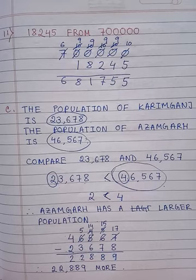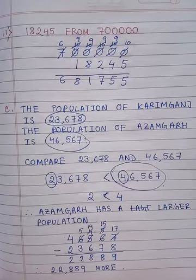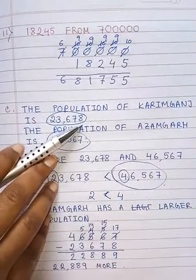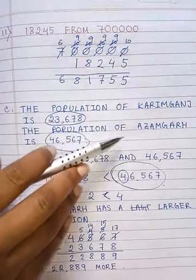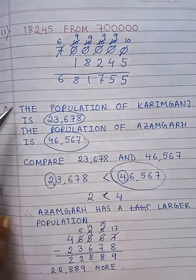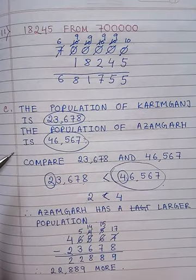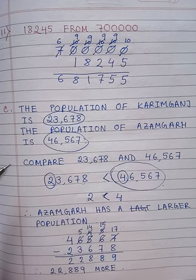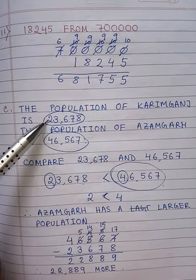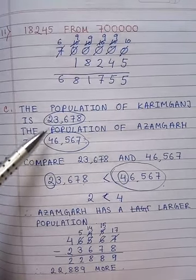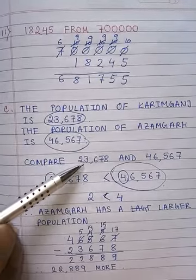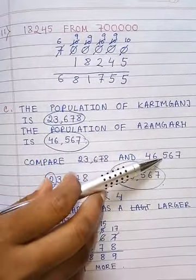Next we will start the story sum — sum number C. The population of Karimganj is 23,678. The population of Azamgarh is 46,567. First write down this statement. The question is: which town has a larger population? We have to compare these two numbers: 23,678 and 46,567.